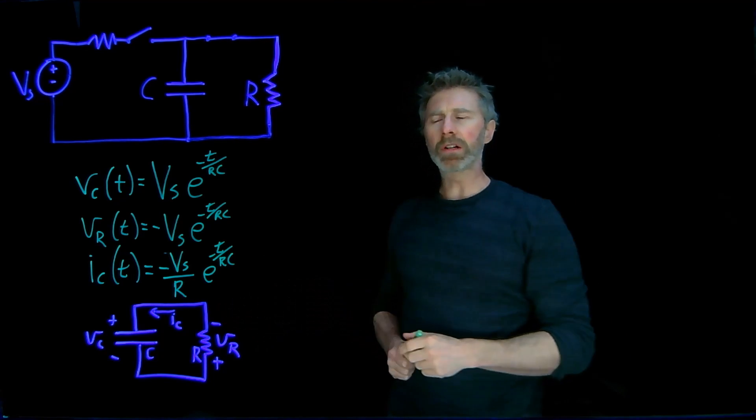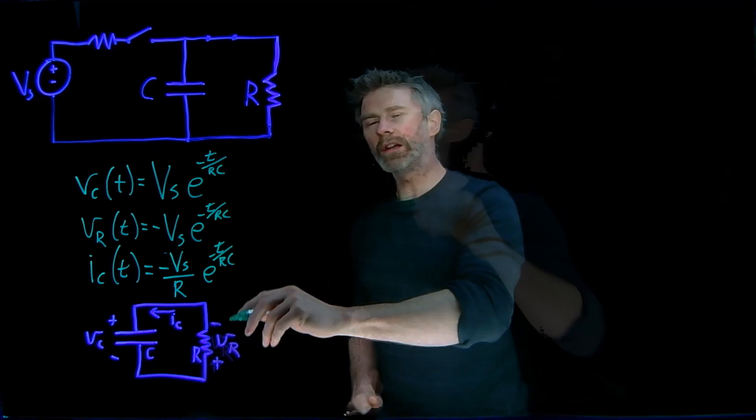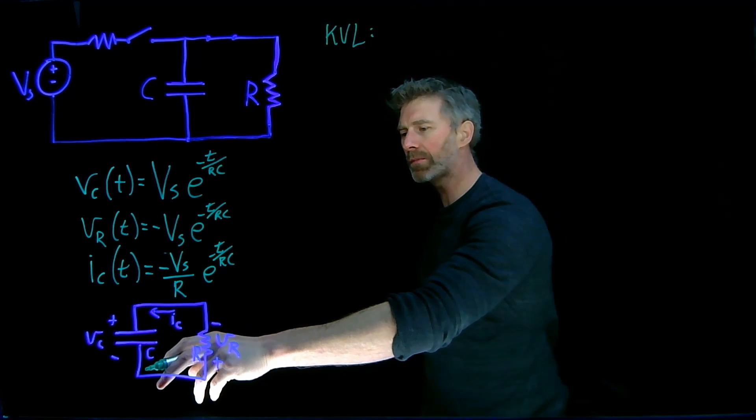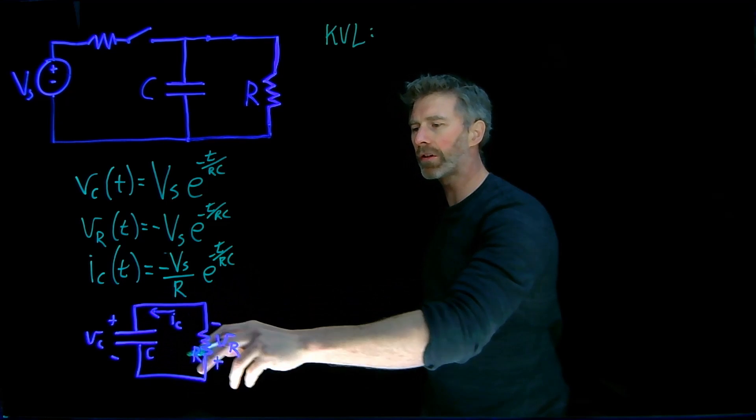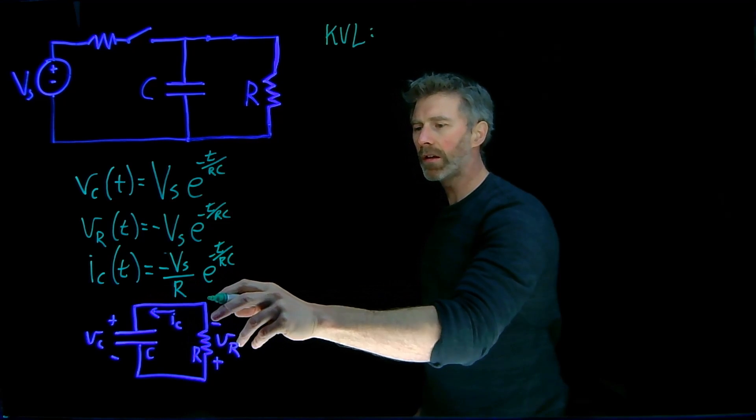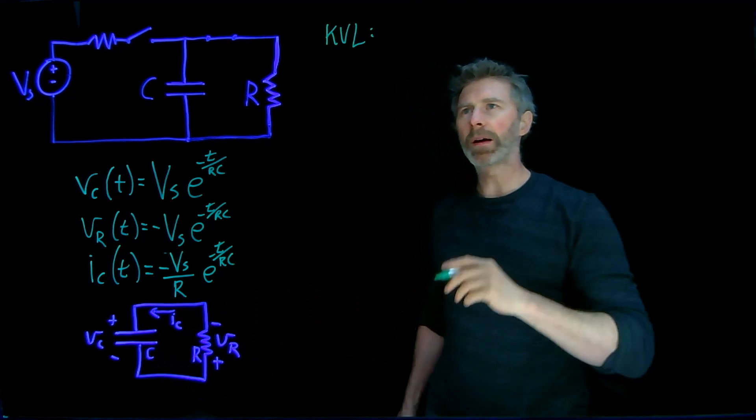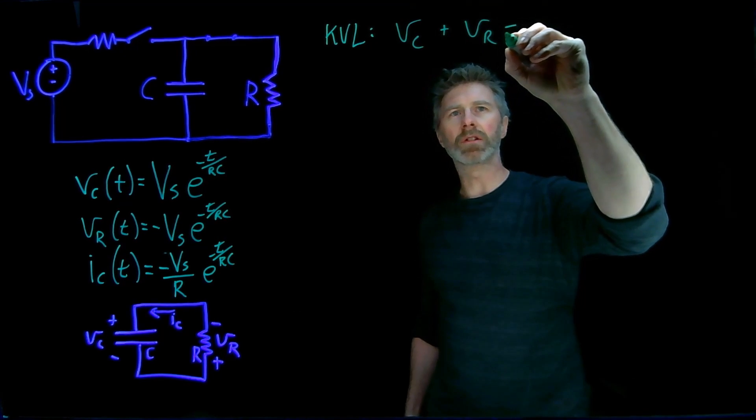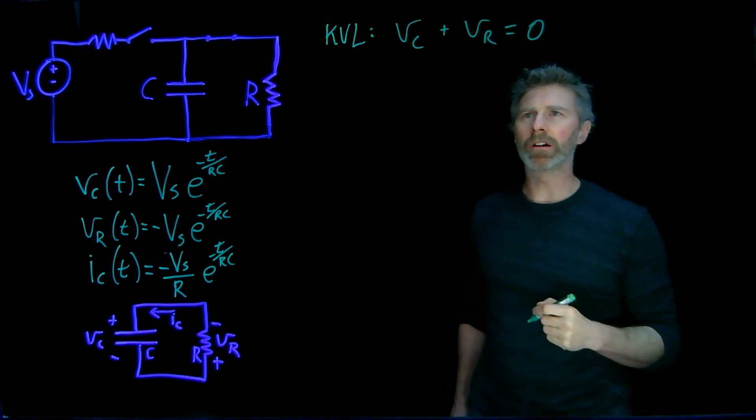Okay, now starting from this circuit right here and using Kirchhoff's voltage law, KVL, we know that if we start at this point and we go around the circuit, we get plus VC plus VR gives us back to zero. So the voltage across the capacitor plus the voltage across the resistor has to equal zero by KVL.